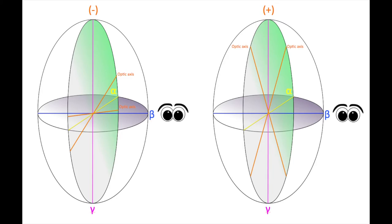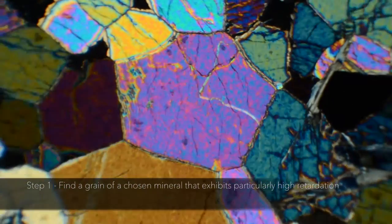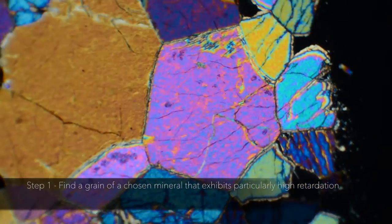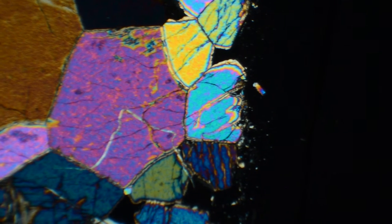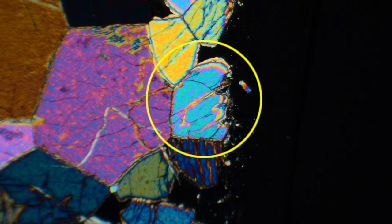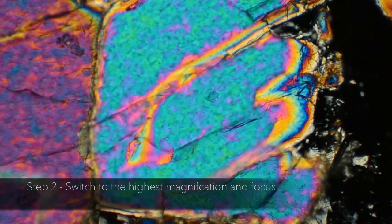Now let's go through the steps to acquire a flash figure. Step 1: With the cross-polarized lens in place, find a grain of a chosen mineral that exhibits particularly high retardation and interference colors. Step 2: Switch to the highest magnification and focus.